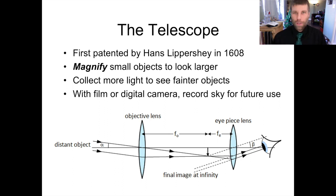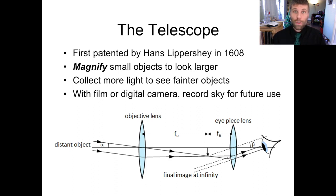First, what's a telescope? Essentially, it's just a collection of lenses or mirrors. Most modern telescopes use mirrors, but Galileo used lenses. It's a collection of lenses that focus light from a faraway object to do two things. First, they magnify the image so that a tiny image that you maybe couldn't even resolve with your eye becomes expanded so you can see a lot more detail. Second, it allows you to collect more light than you could just with your pupil, so you can see fainter objects than you would be able to with your unaided eye.